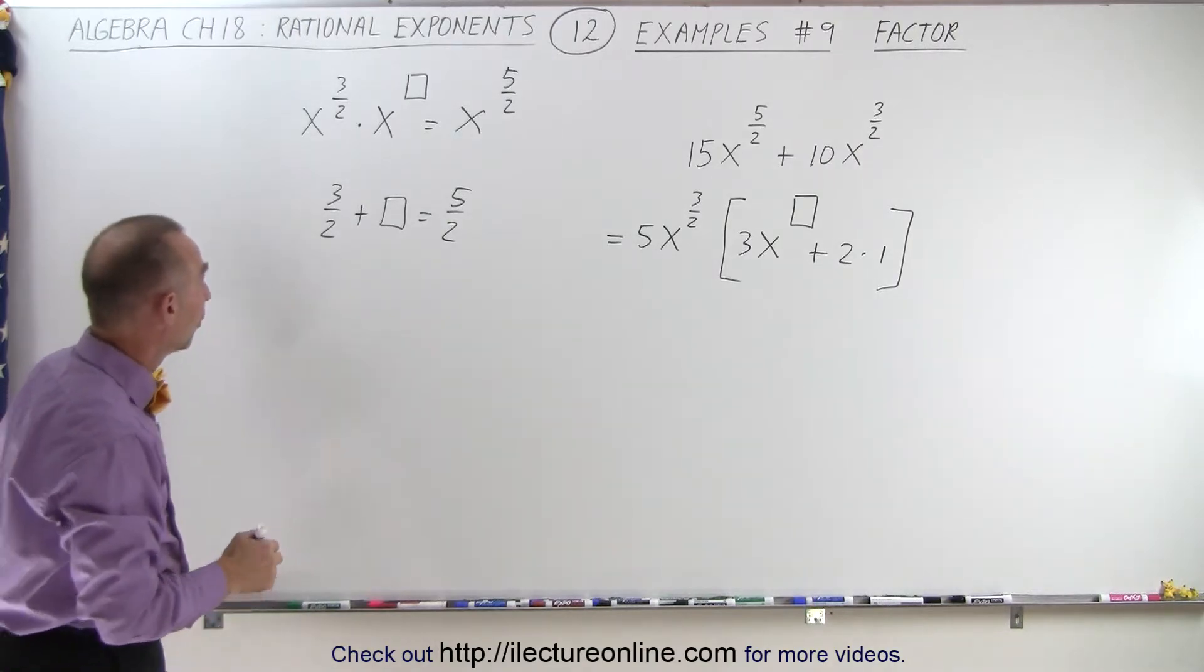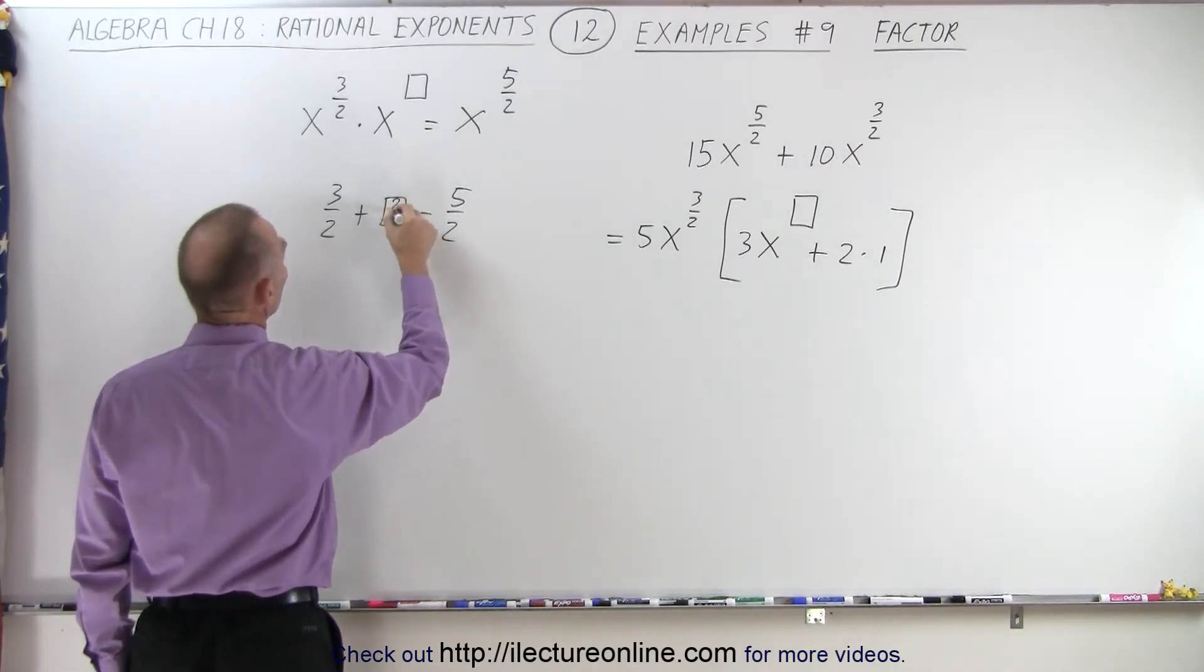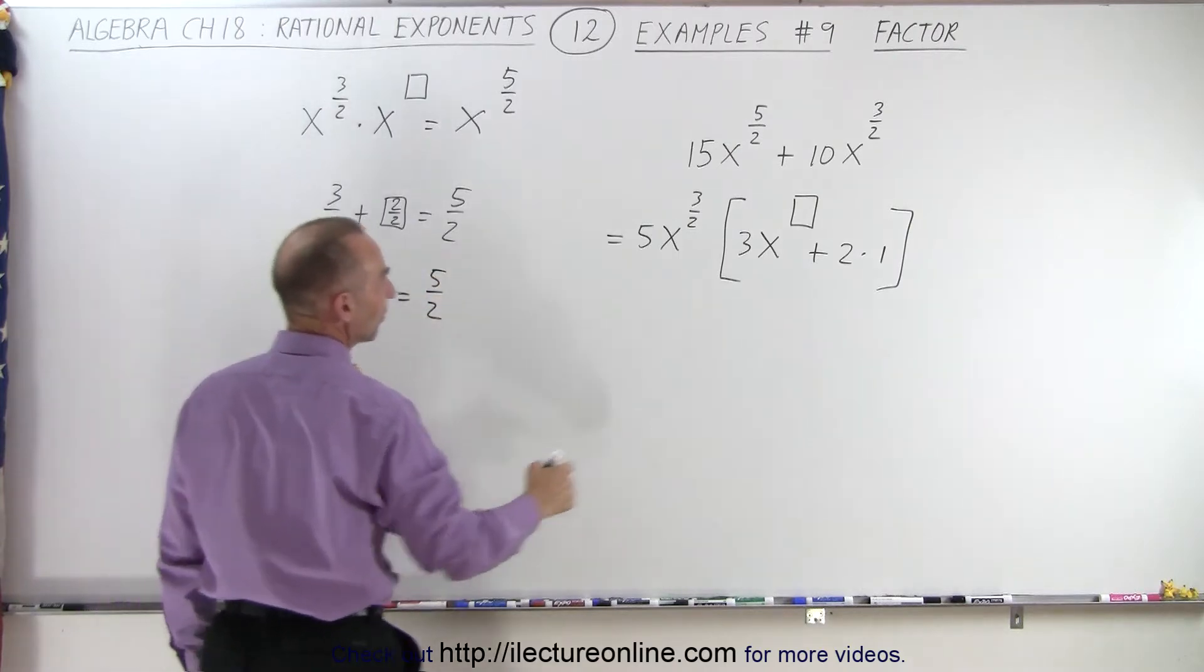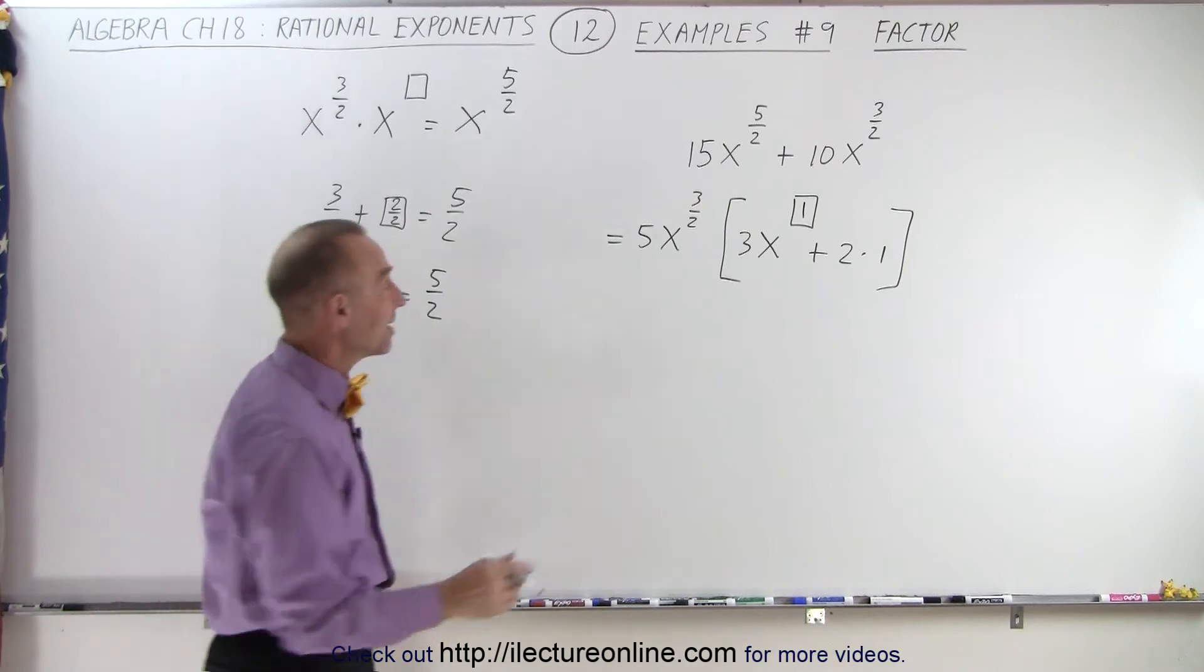So what added to 3 over 2 gives us 5 over 2? Well, that would be 2 over 2 or 1. So 3 over 2 plus 1 equals 5 over 2, which means the exponent in here must be equal to a 1.